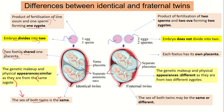Meanwhile, for fraternal twins, two zygotes are formed when two sperms fertilize two ova, and the embryos do not divide. Each fetus has its own separate placenta. Their genetic materials and physical appearances are different since they come from different zygotes. Their sex or gender may be different or the same — both could be girls, both could be boys, or one could be a boy and the other a girl.